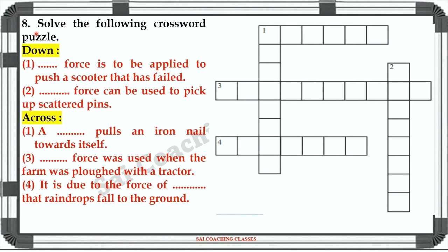Question number 8: Solve the following crossword puzzles. Down 1: Dot dot force is to be applied to push a scooter that has stalled. Answer: Muscular. Down 2: Dot dot force can be used to pick up scattered pins. Answer: Magnetic.